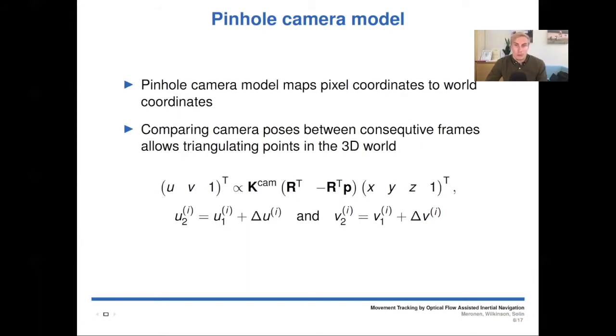Because the optical flow, which is here delta U and delta V, tells us the change in pixel coordinates between the frames, and we can expect the same world point to stay stationary.